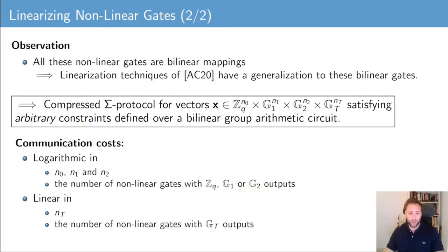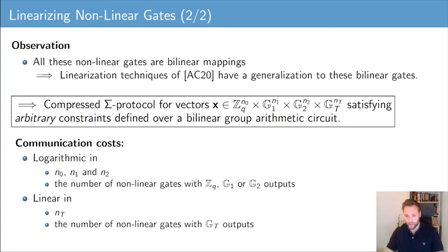However, the communication costs are linear in Nt and also linear in the number of non-linear gates with Gt outputs. These linear communication costs are due to the fact that the commitment scheme we are using is not compact in the G2 part of the committed vector.